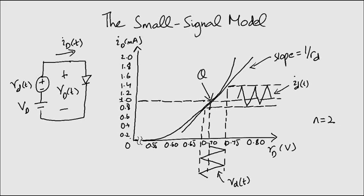The small signal is assumed to have a triangular waveform. In reality, it could have any waveform. It is superimposed on the DC voltage as you can see here.